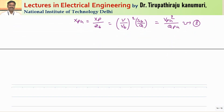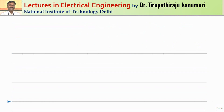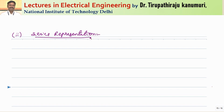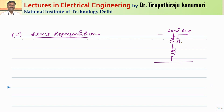In the last class I took one numerical using the parallel representation and mentioned that the series form can also be used. Let us now see the derivation for series representation of the load. In the conventional manner, we always represent impedance by series components. So in the series representation, this is my load bus with values r and x in series. In parallel representation the voltage is the same; in series representation the current is the same through both components.